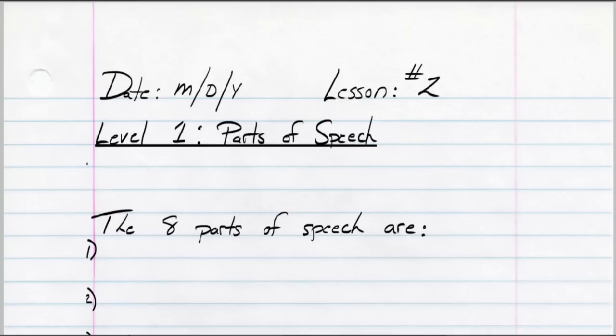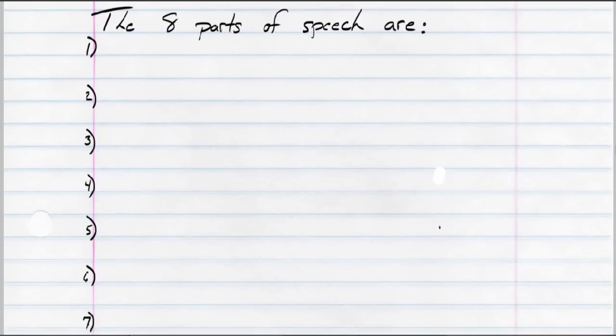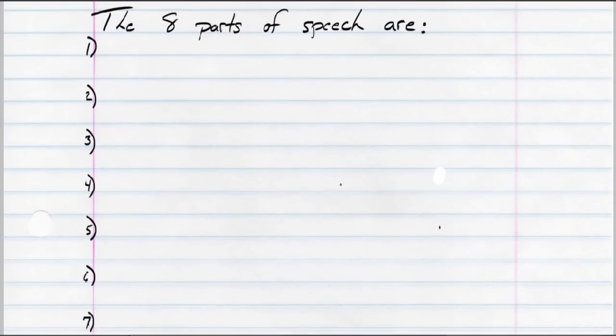Skip three lines and write this: 'The 8 parts of speech are...' While you're writing that, I'm going to move my screen up but leave the last note at the top. Again, 'The 8 parts of speech are...' Then number every other line after that all the way up to number 8 — so 1, 2, 3, 4, 5, 6, 7, and 8.